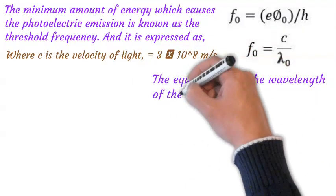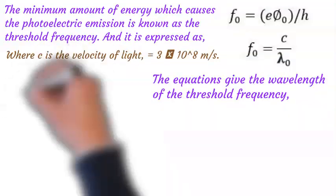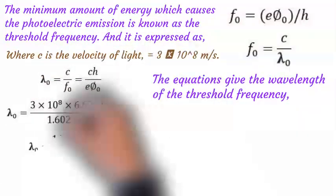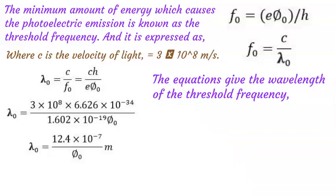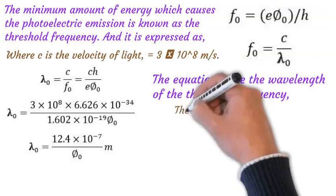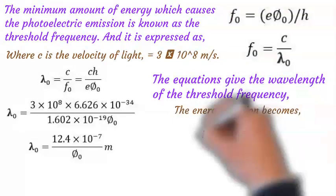The equation gives the wavelength of the threshold frequency. If the radiation is above the threshold, the phenomenon of photoelectric emission will only occur when the magnitude of the wavelength is greater than given by the threshold equation. The energy relation then becomes as expressed in the following formula.